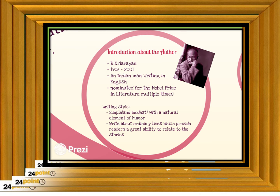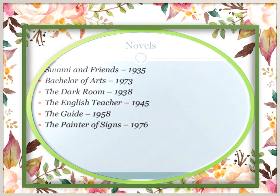R.K. Narayan was born in 1906. He was one of the most celebrated writers of Indian literature in English and he wrote about the everyday lives of ordinary people with humor and kindness. He is an Indian man writing in English and has been nominated for the Nobel Prize in Literature multiple times.